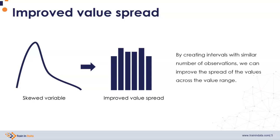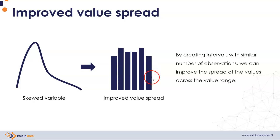There are different discretization methods, and some of them can improve the value spread of the variable. So if we have a skewed variable like the one we see here, and we select the correct discretization method, we can improve the value spread so that we have a more even distribution of observations across all intervals. This may help improve the performance of some machine learning models.